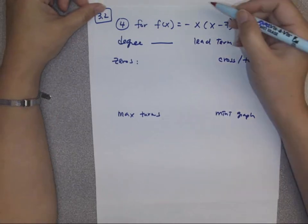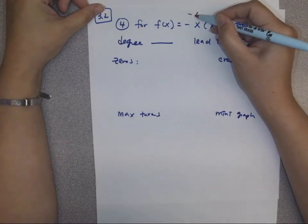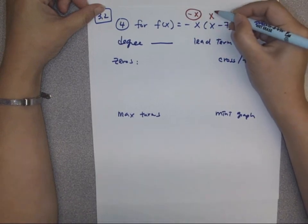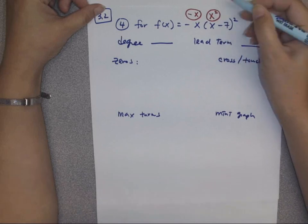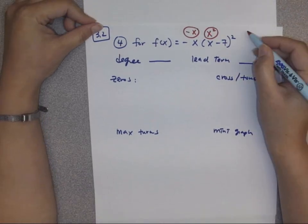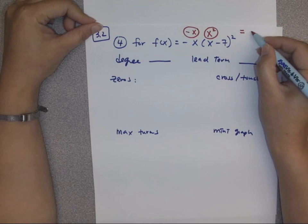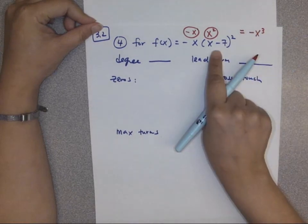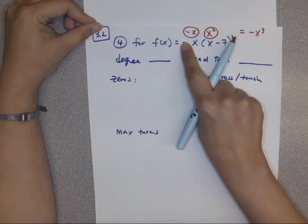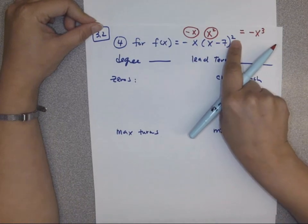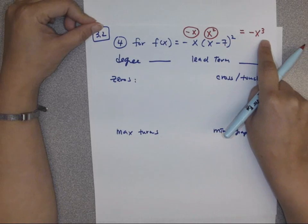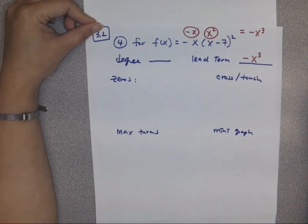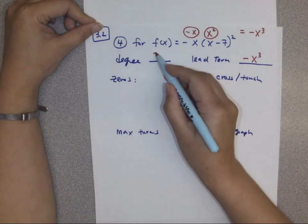Looking here, the first term is negative x, and it needs to multiply by x squared. If you multiply these two together, you end up with negative x cubed. Don't try to multiply it all out — I just need to know the sign and the degree. So the leading term is negative x to the third power, which makes it degree three.